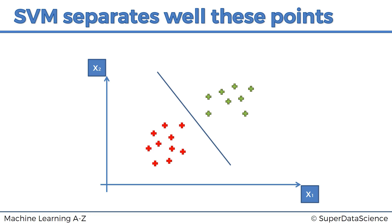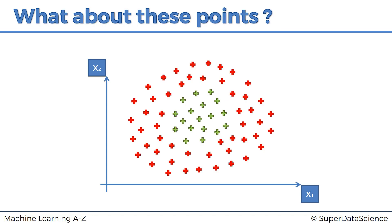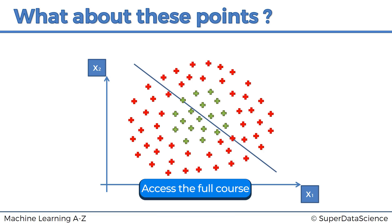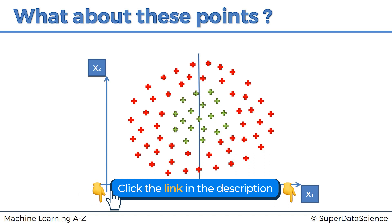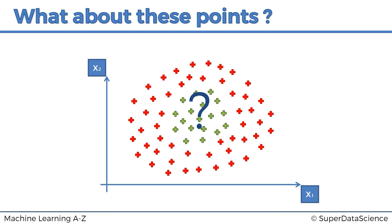But what happens when we cannot find a boundary? What happens in a situation like this, for example? We can't just draw a line through these points — we can't separate them with a straight line, a horizontal line, or a vertical line. Whatever we try, we cannot separate these points in the same way the support vector machine algorithm told us to. So what happens in this situation and why does it happen?